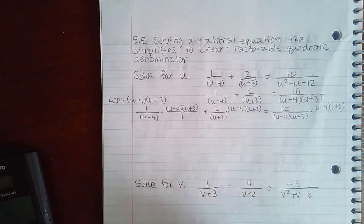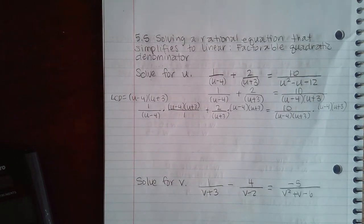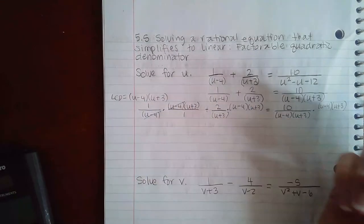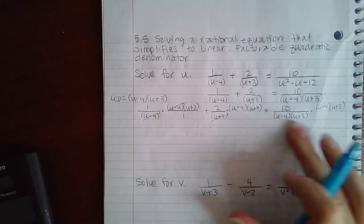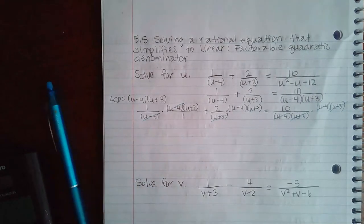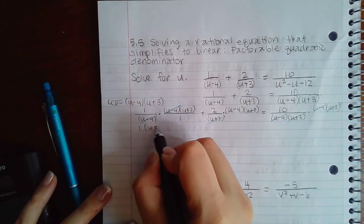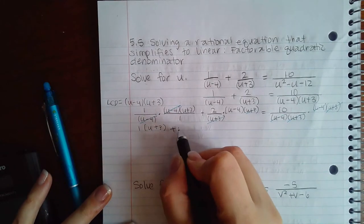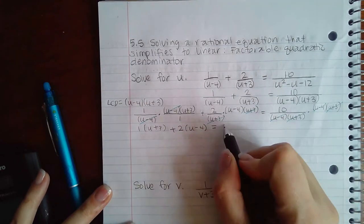We start to do our reducing or simplifying. For the first fraction, I noticed that the u minus 4s will cancel. In the second fraction, the u plus 3s will cancel. In the last fraction, the u minus 4s cancel and the u plus 3s cancel. What am I left with? I'm left with 1 times the u plus 3 plus 2 times the u minus 4 and then just 10 on the other side.